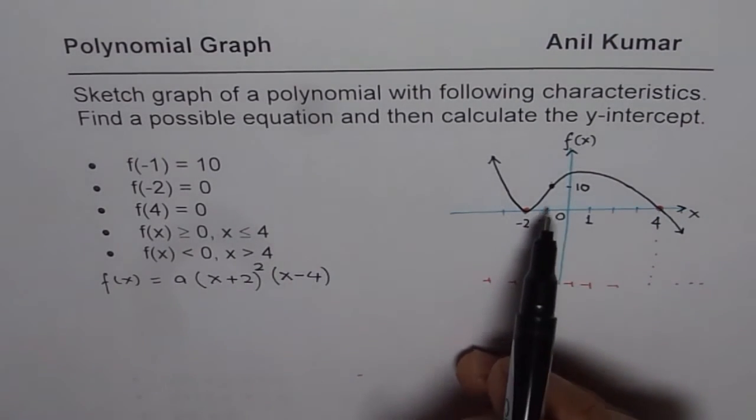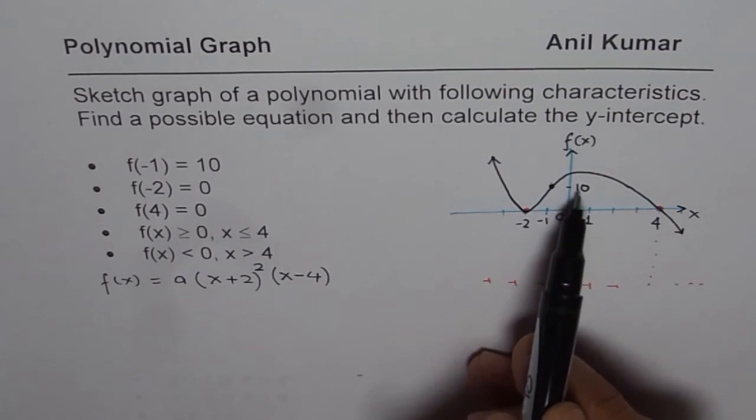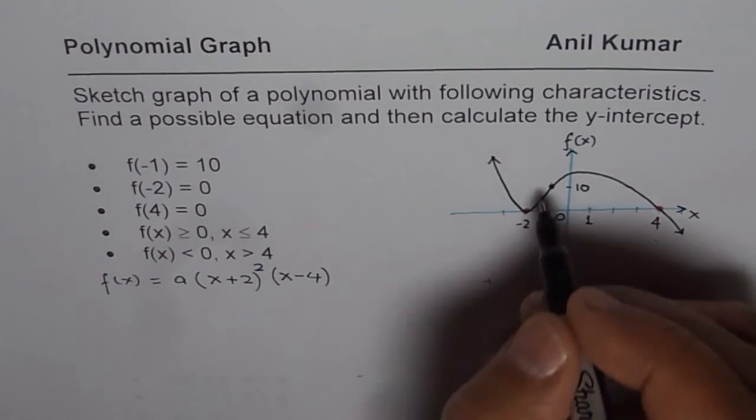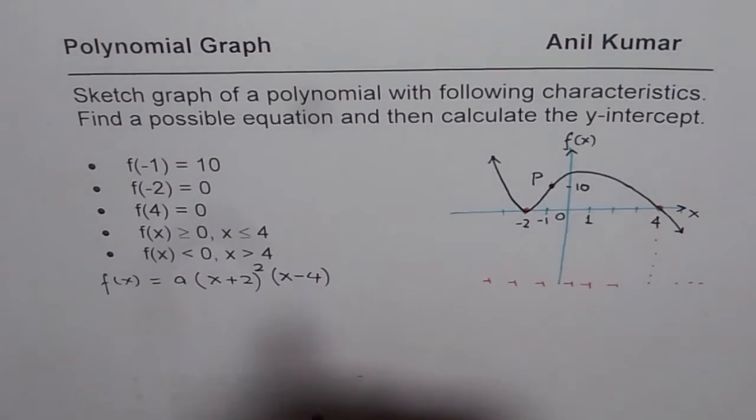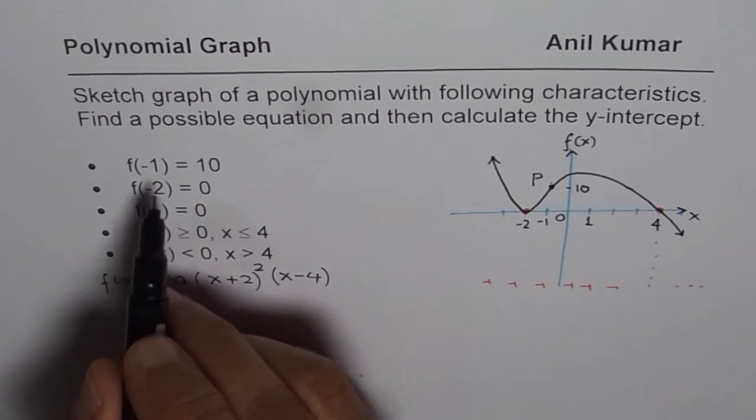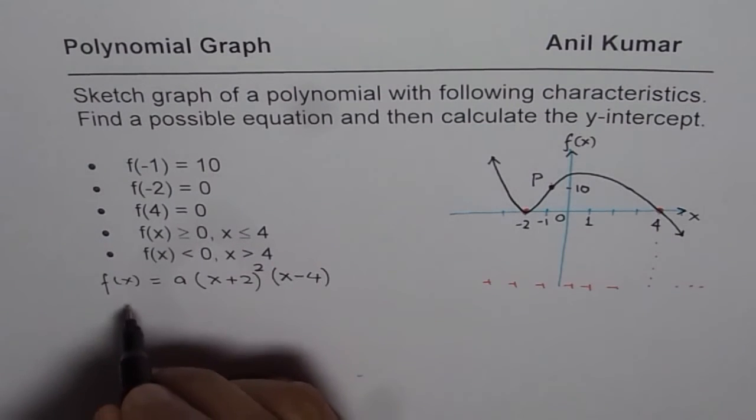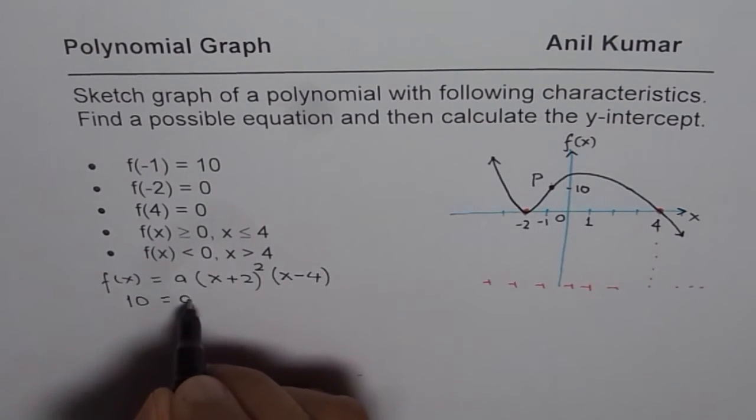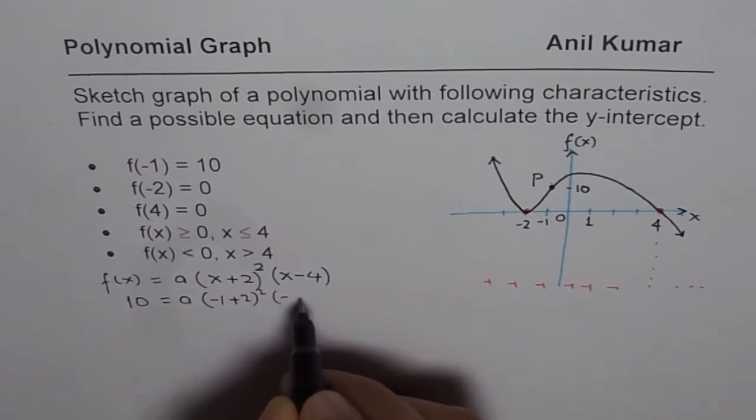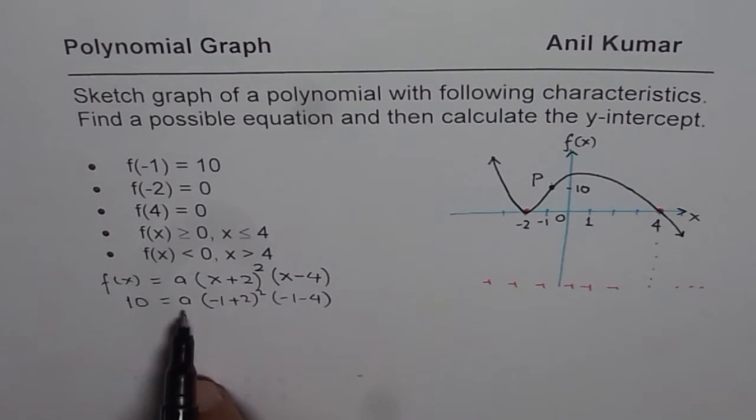Now since the graph goes to the point minus 1, 10, we know this point lies on the function itself. So we will substitute this point. Let us call this point P. So which is f of minus 1 is 10. So if I write minus 1 here, f of x is 10. So we can replace this value. So 10 is equal to a times x is minus 1 plus 2 whole square minus 1 minus 4. So that will help us to calculate the value of a.